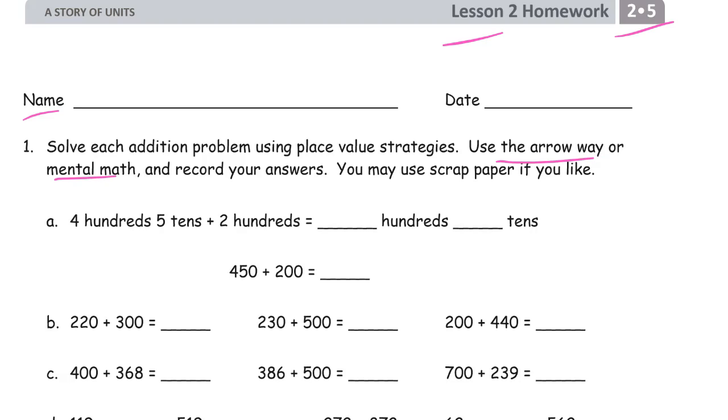Use the back of the second page if you're using two sided pages. So we have unit form 4 hundreds 5 tens plus 2 hundreds. So how many hundreds are we gonna have? We've got four, we've got two, we're gonna have six hundreds.